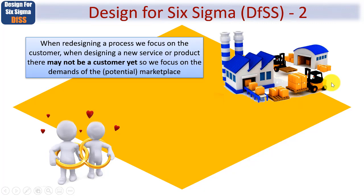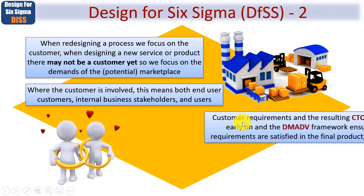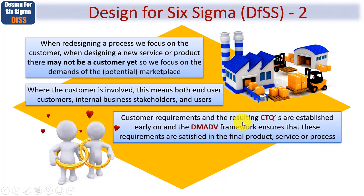However, when designing a new product or service, there may not be a customer yet. So instead, we focus on the demands of the potential marketplace. Where the customer is involved, this means both end-user customers, internal business stakeholders and the users themselves. Customer requirements and the resulting CTQs — that stands for Critical to Quality — are established early on. When designing for Six Sigma, the DMADV framework ensures that these requirements are satisfied in the ultimate final product, service or process that your project will deliver.